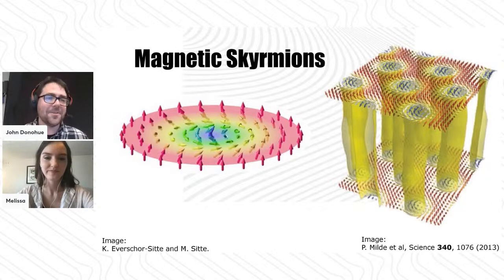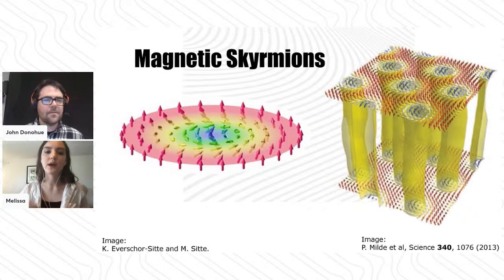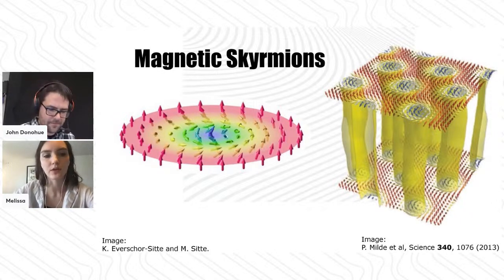Let's assume for the moment we did have this ideal material and these skyrmions did fully penetrate. We do have this topological protection - it costs a lot of energy for them to change their winding number. What would be interesting about that? What are some of the ideas that people have for how to actually use these skyrmions?